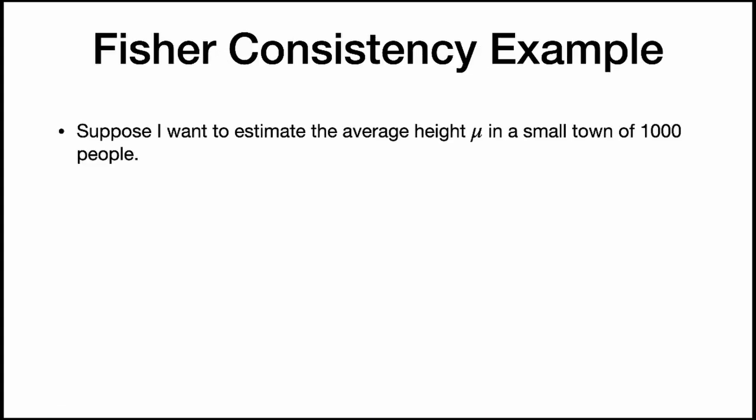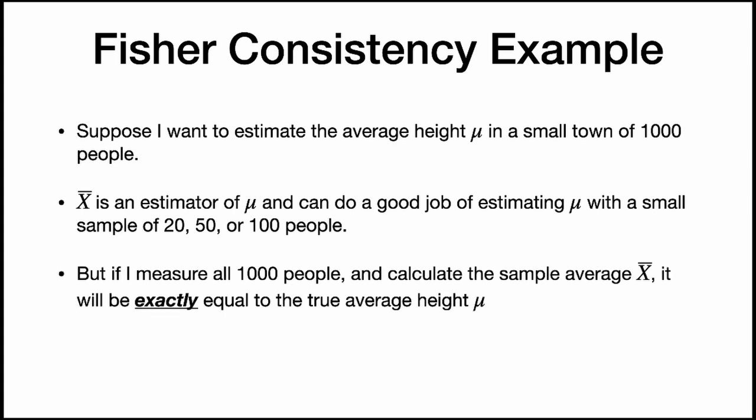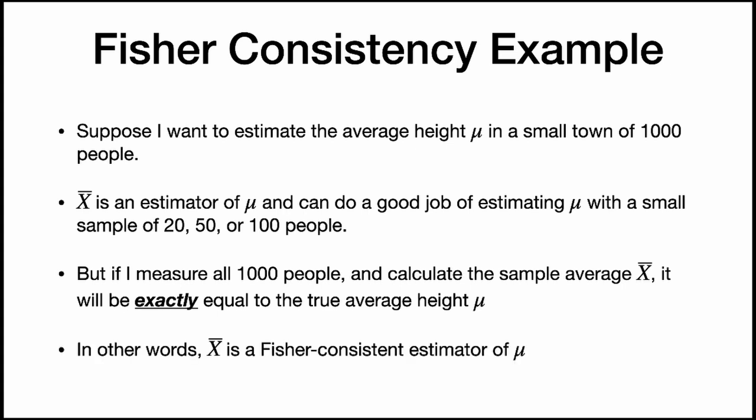Let's see an example. Suppose we want to estimate the average height mu in a small town of 1,000 people. X-bar, the sample mean, is an estimator of mu, and it can do a good job estimating mu from a small sample of 20, 50, or 100 people. But if we measured all 1,000 people and calculated x-bar, it will be exactly equal to the true average height mu. In other words, x-bar is a Fisher consistent estimator of mu. This is Fisher consistency.